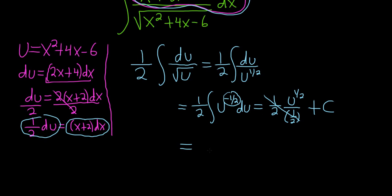And the u to the 1 half will turn back into a square root. And u was all of this stuff over here: x squared plus 4x minus 6. What a pretty answer. And then we have our plus c. What a nice problem.